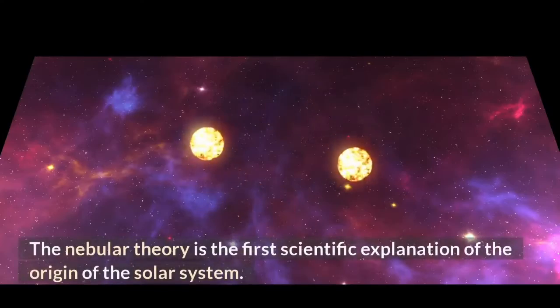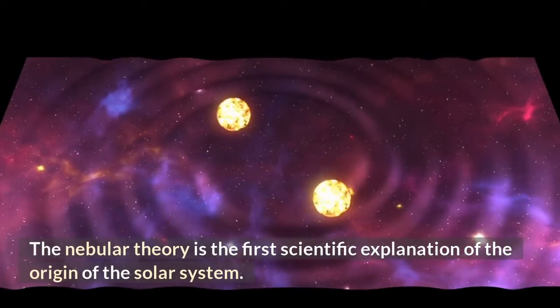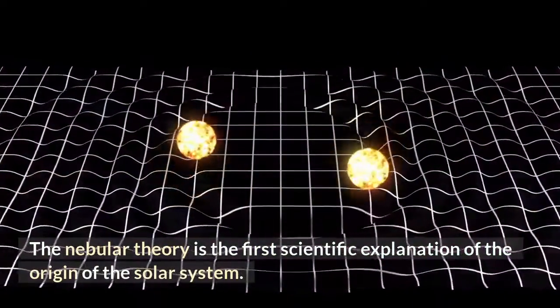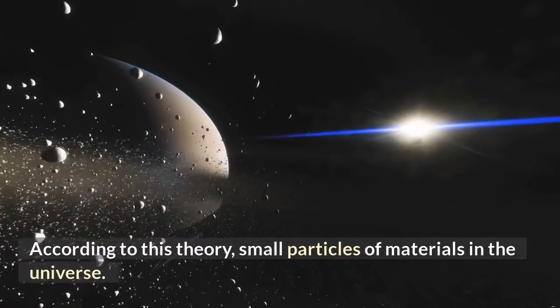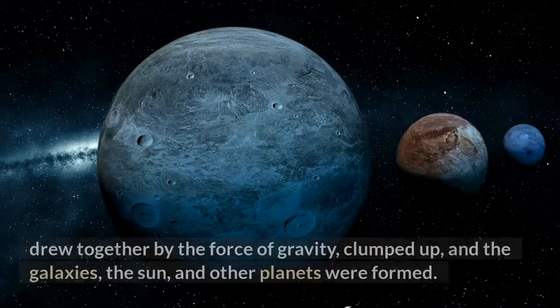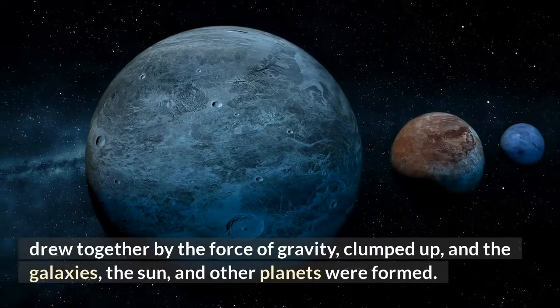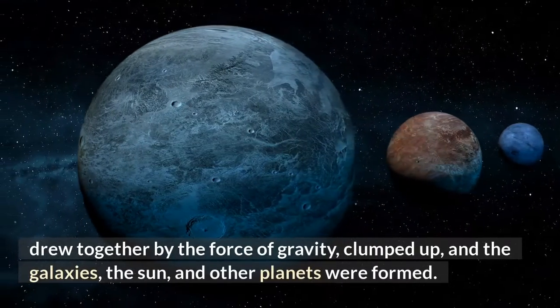The nebular theory is the first scientific explanation of the origin of the solar system. According to this theory, small particles of materials in the universe drew together by the force of gravity, clumped up, and the galaxies, the sun, and other planets were formed.